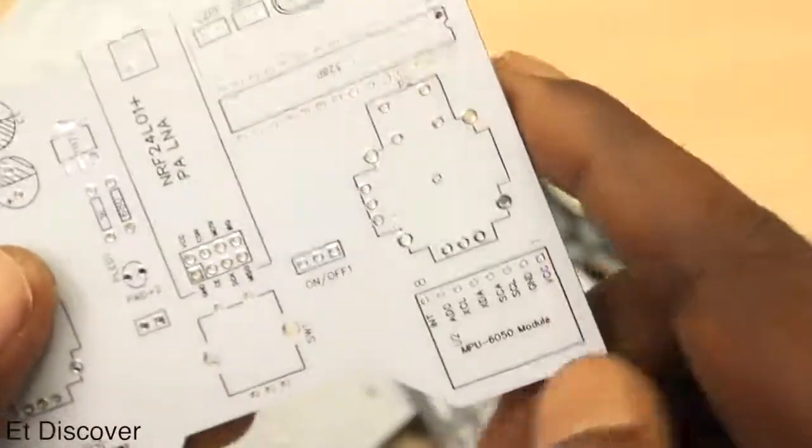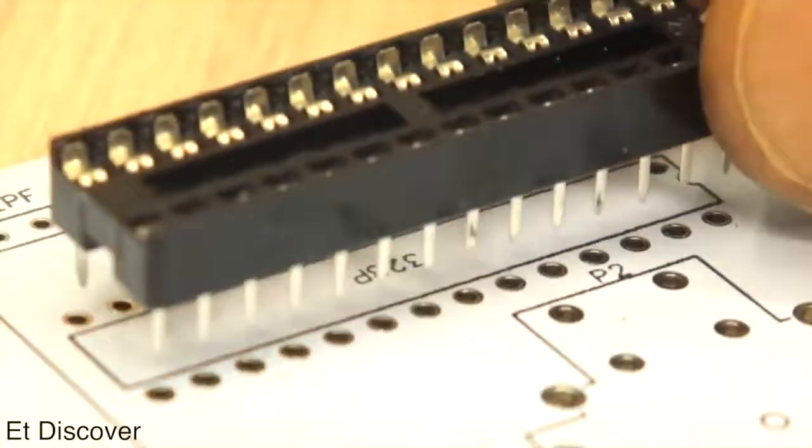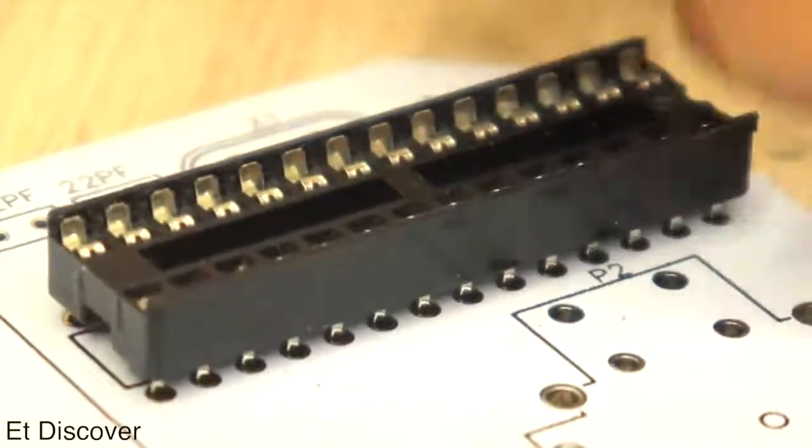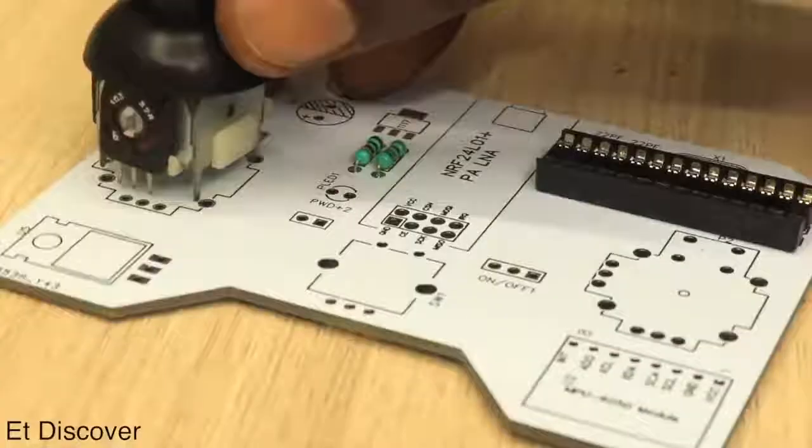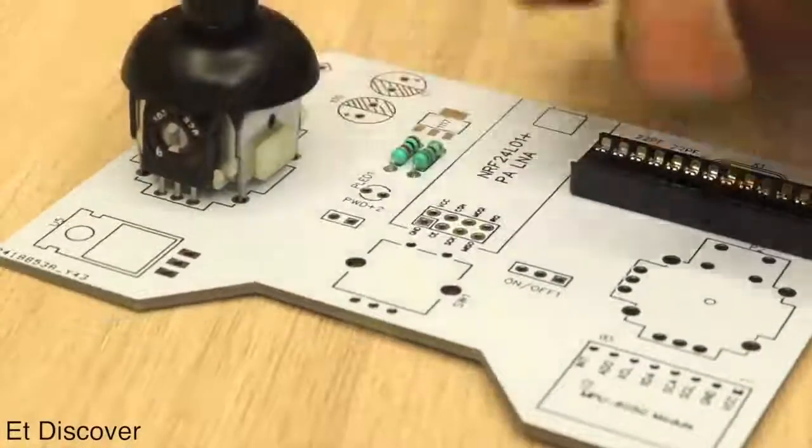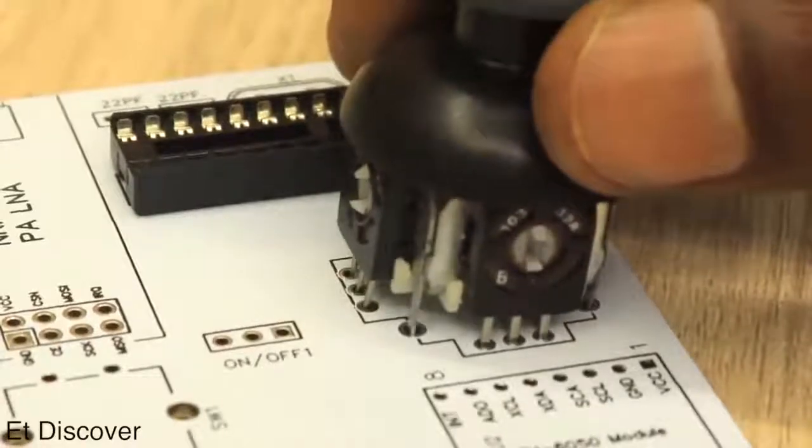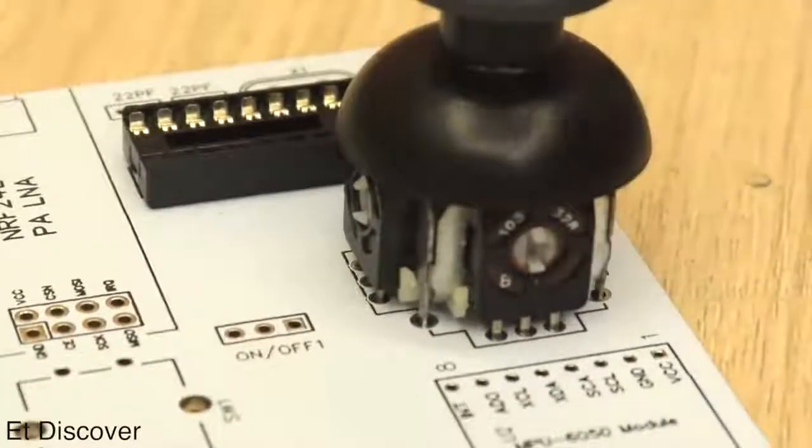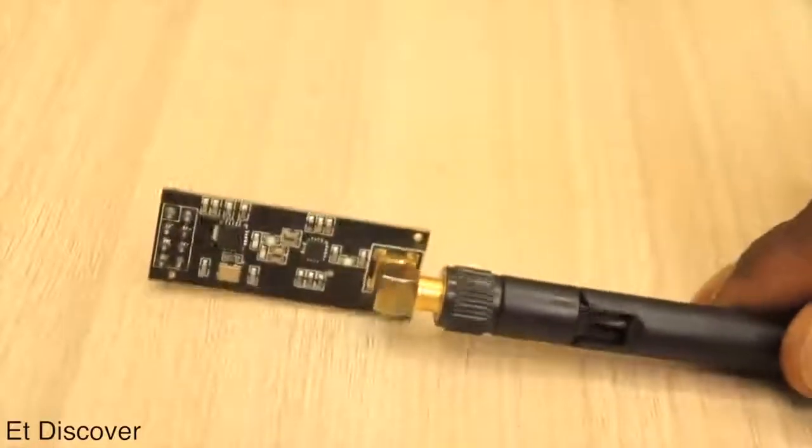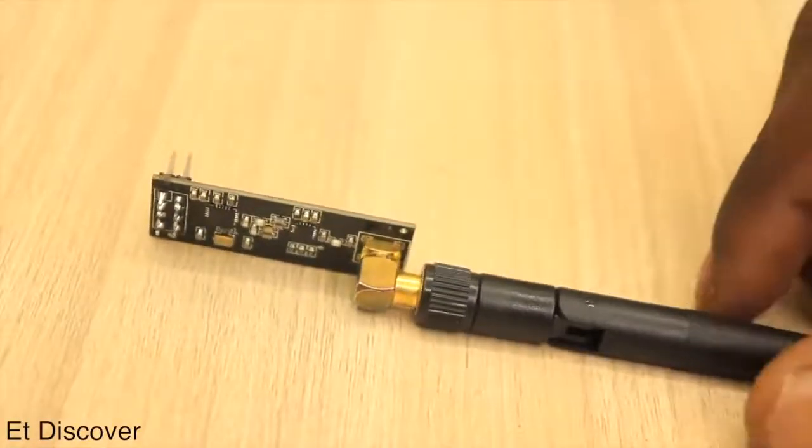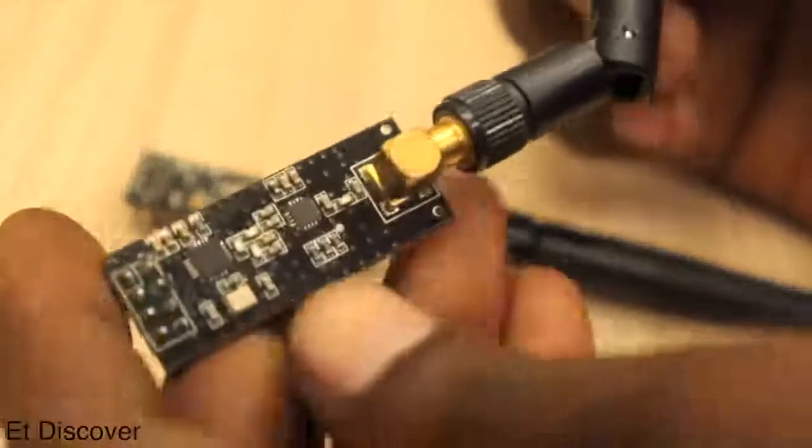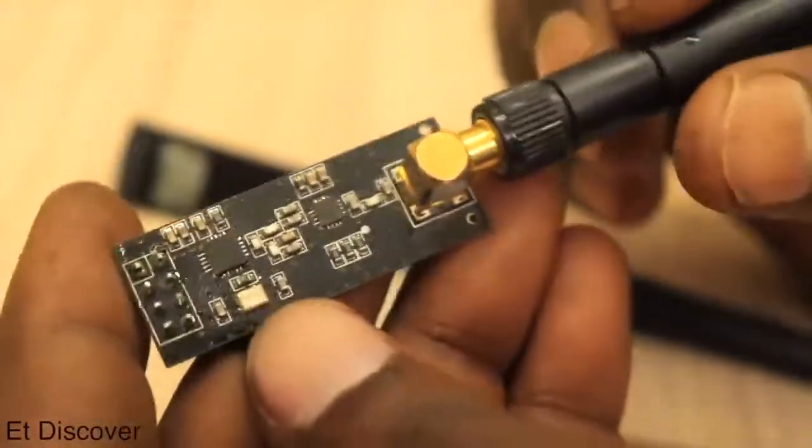Without wasting time, let's mount all the components. For the transmitter I'm using Atmega328P DIP version. Each joystick has two potentiometers. These potentiometers make different types of analog values and this analog value is picked by the microcontroller. The microcontroller converts the signal to a digital PWM signal and this PWM signal transmits with the NRF24 module.